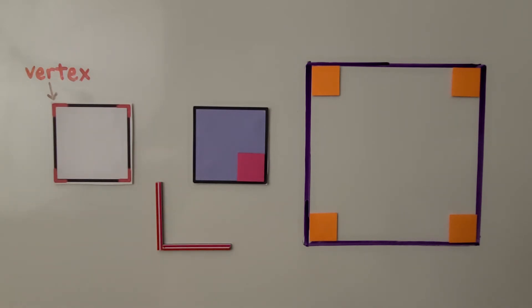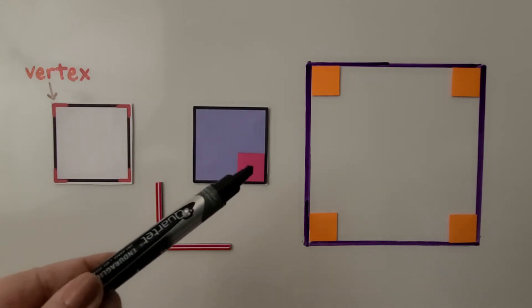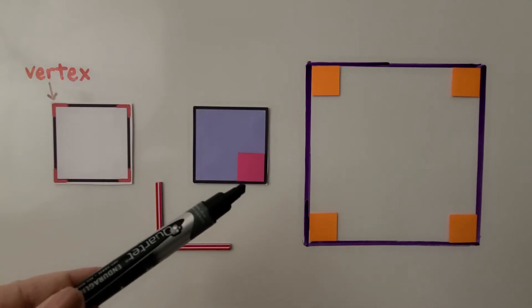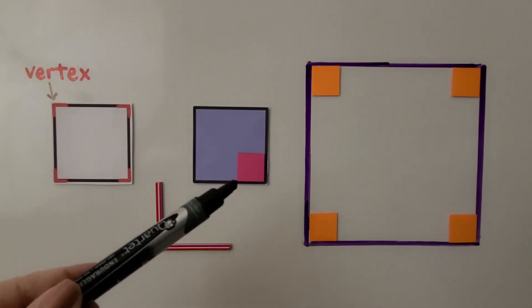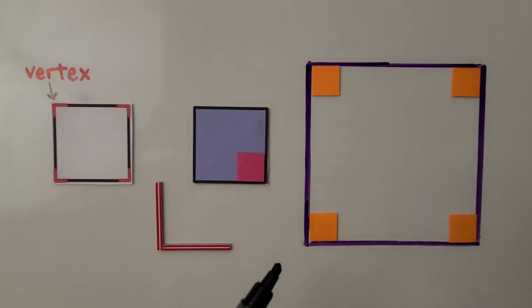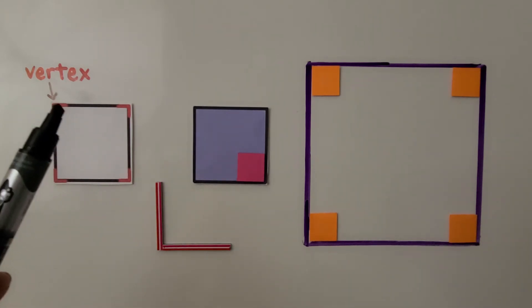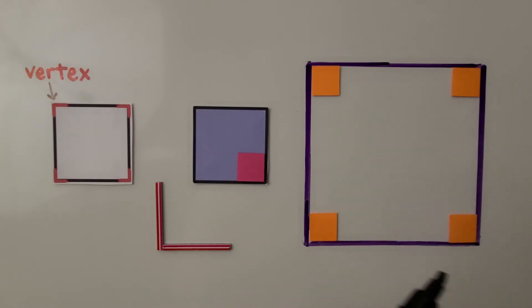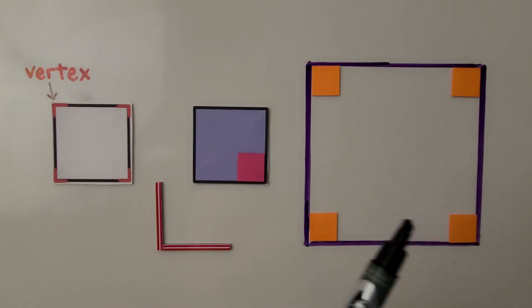Some shapes, like a square, have square corners. We can fit another square into the corner to see how they line up on two sides. A square has four sides and four square corners — four square vertices. Each corner is called a vertex, and more than one vertex are vertices. A square has four sides of equal length and four square vertices.